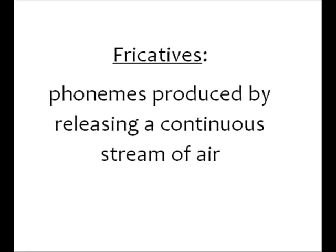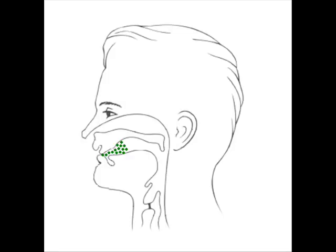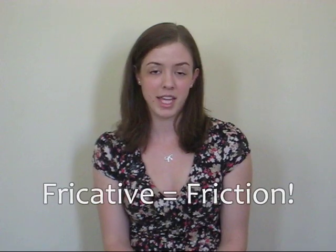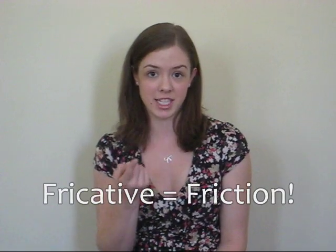The second group are fricatives. These are created when a continuous stream of air passes through a small opening anywhere in the vocal tract. For example, if you pass a stream of air between your top teeth and your bottom lip, you get the sound 'v'. Think friction.